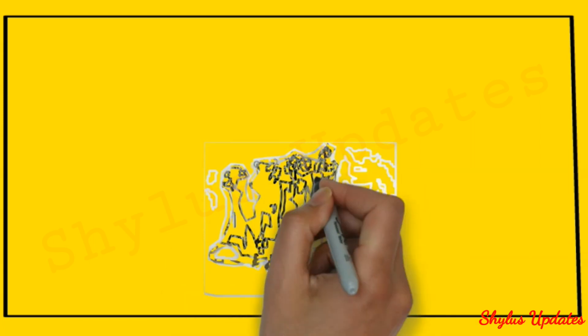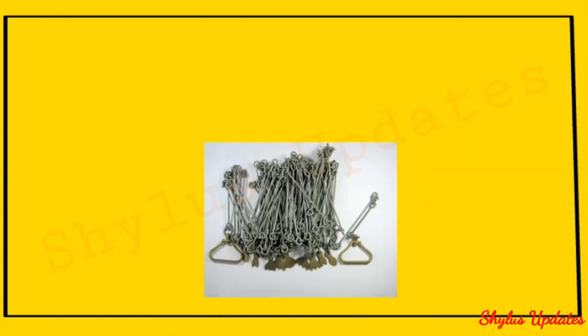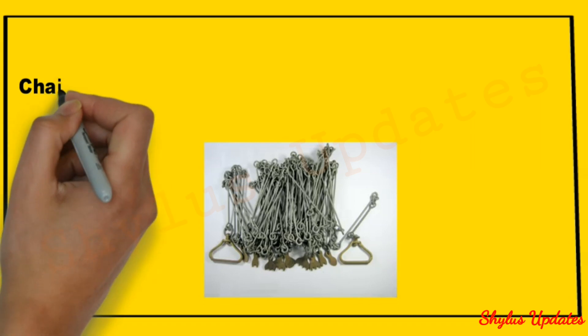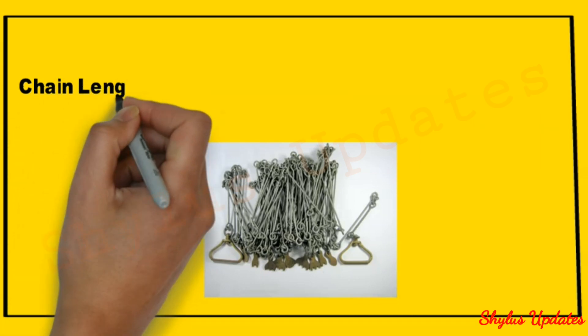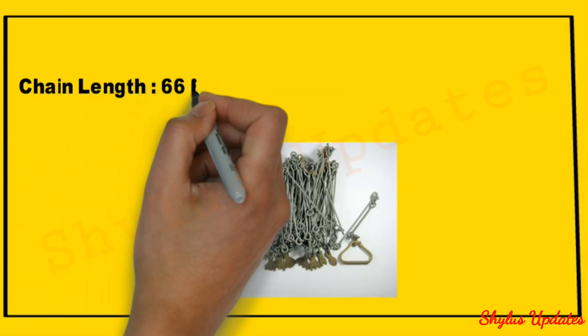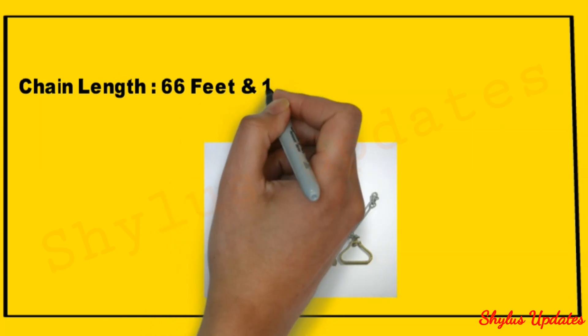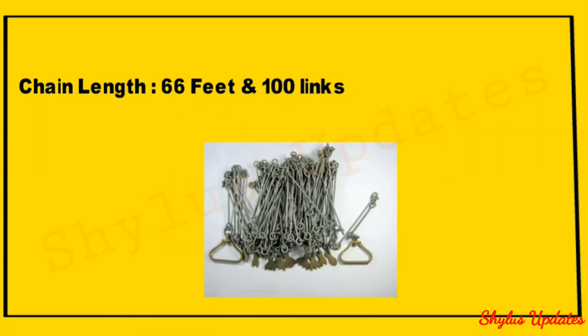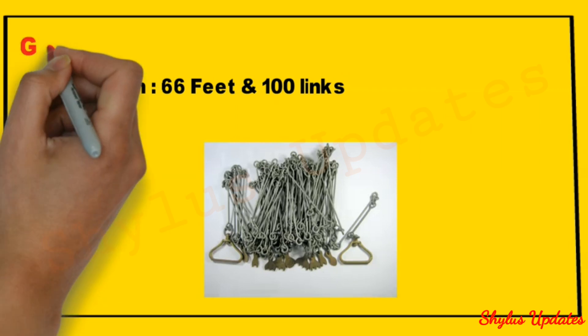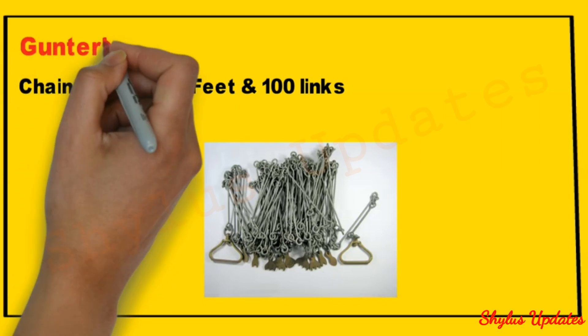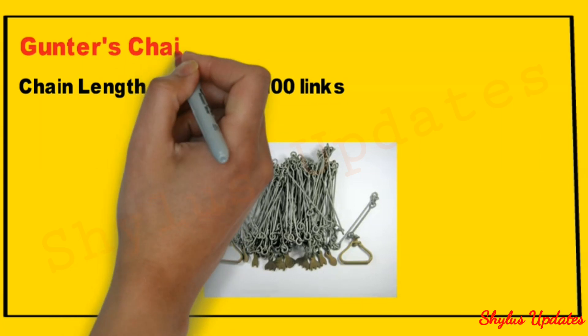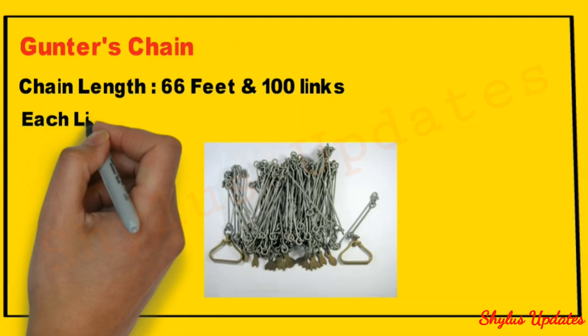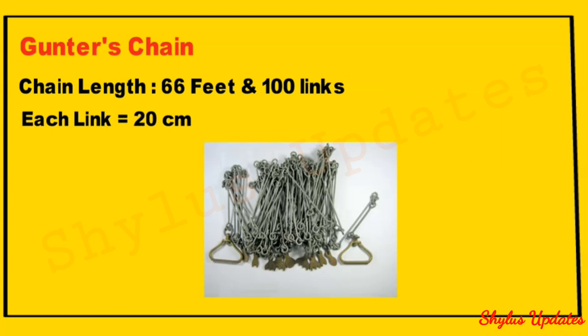It could be a round value, but why a decimal value, 435.6 square feet? The reason is in ancient days our ancestors used only chain to measure length, and that chain length is 66 feet and it has 100 links, which is called Gunter's chain. Each link is 20 centimeters.